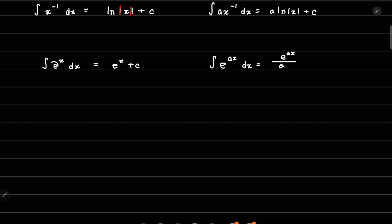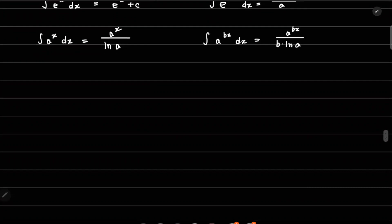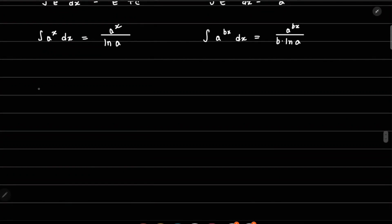If we have a separate base — so instead of e, other numbers as the base — the integral of a to the power x dx is a to the power x divided by the natural logarithm of a. If it is in the form a to the power bx, the integral is a to the power bx divided by b times ln a.